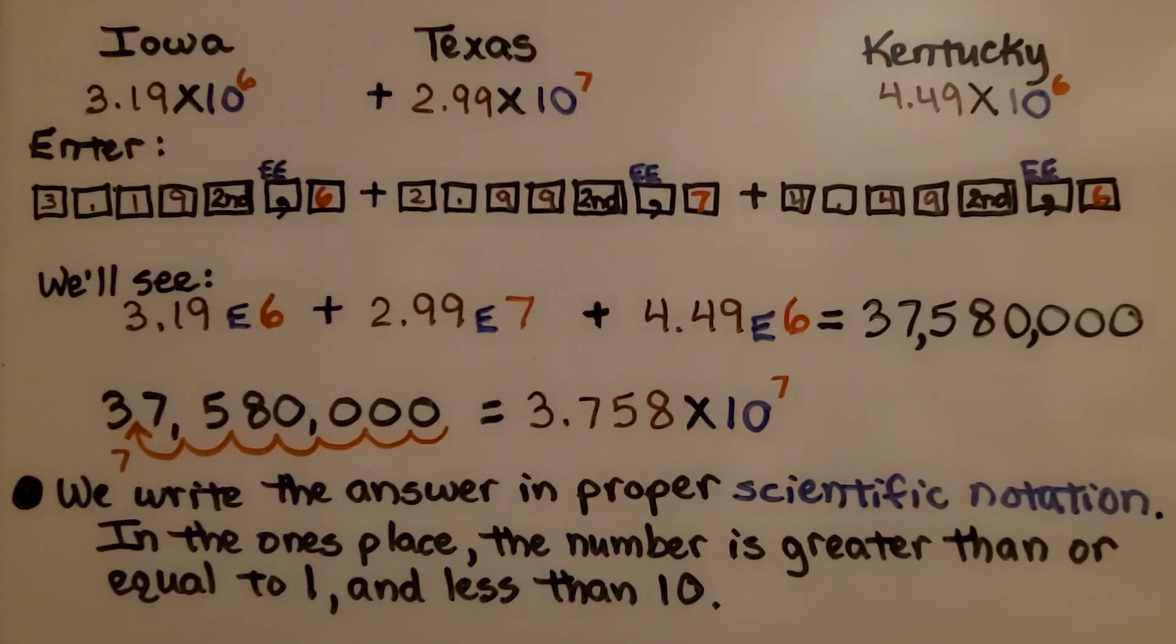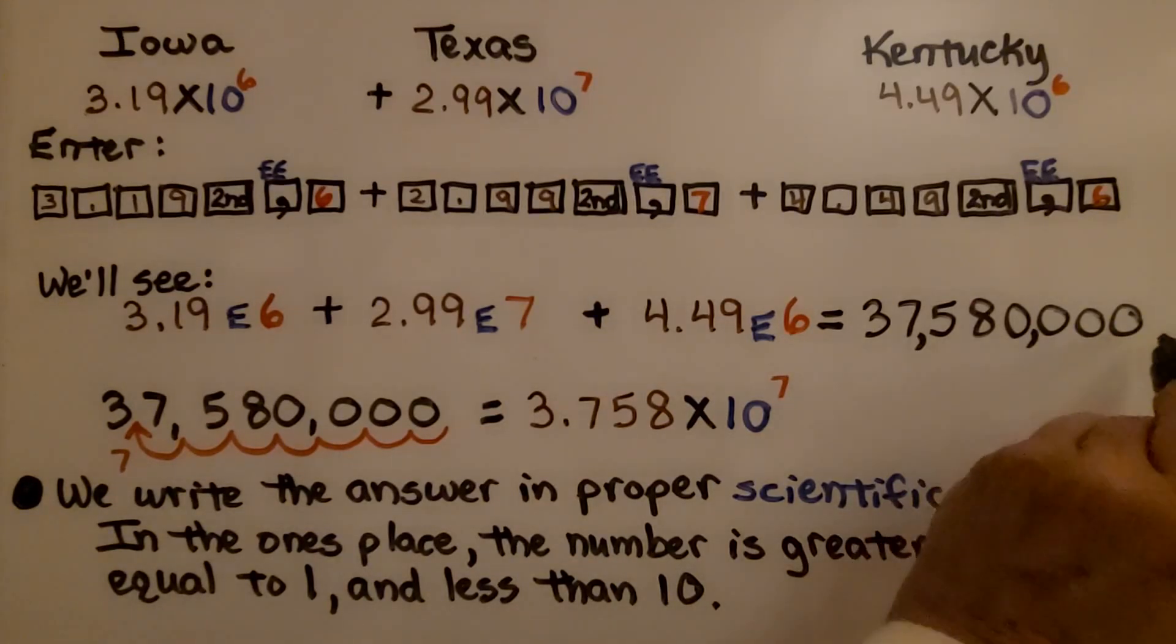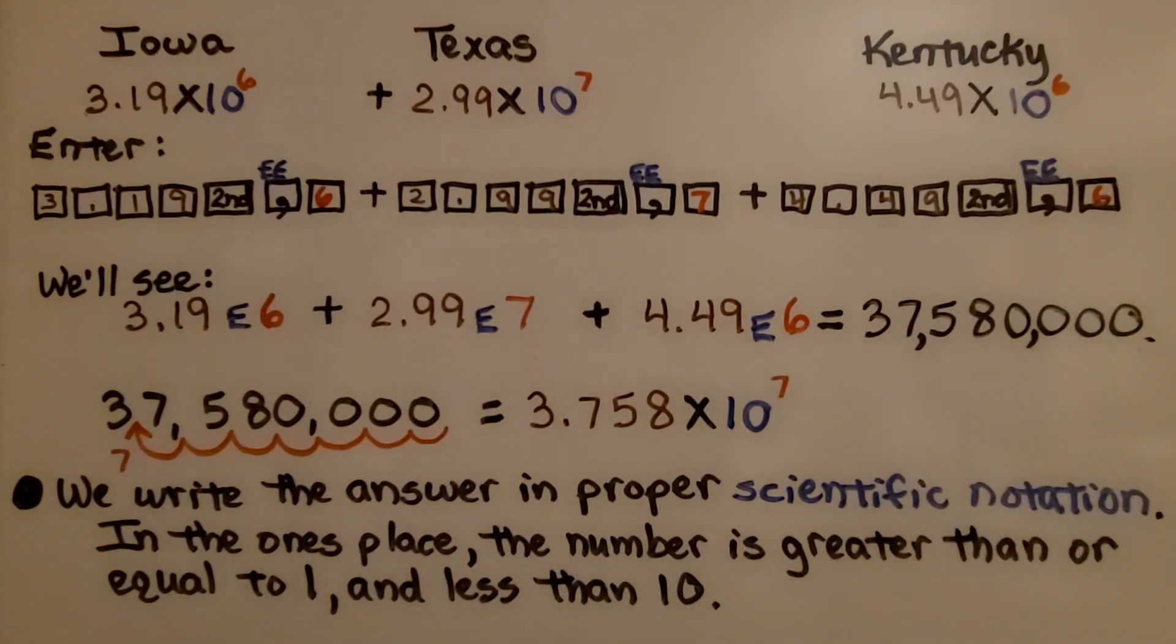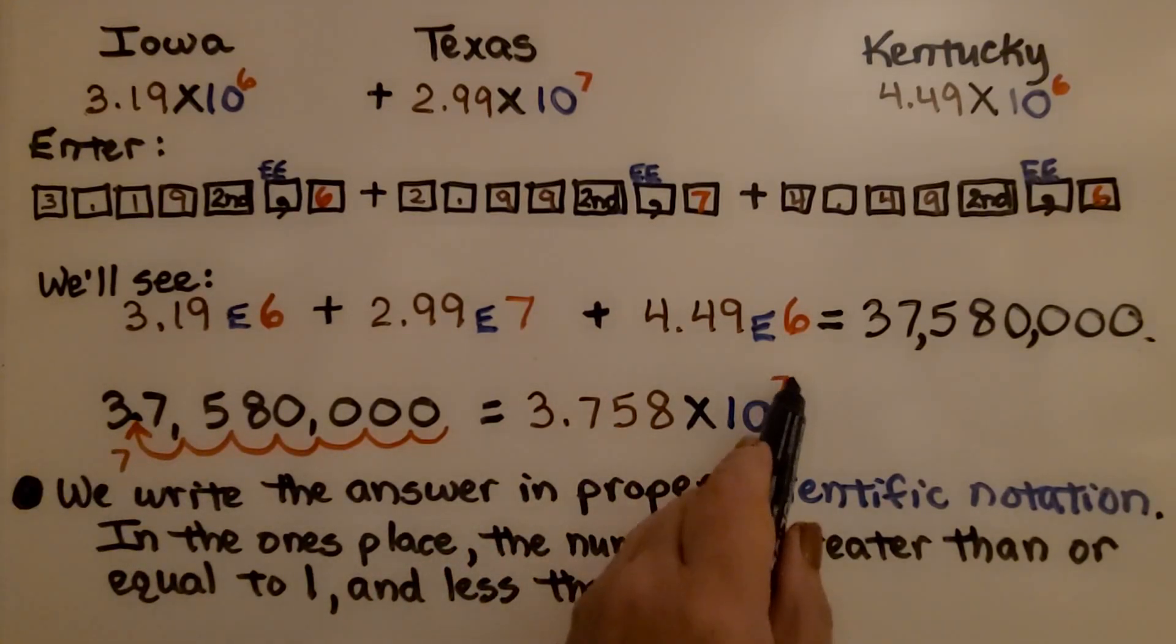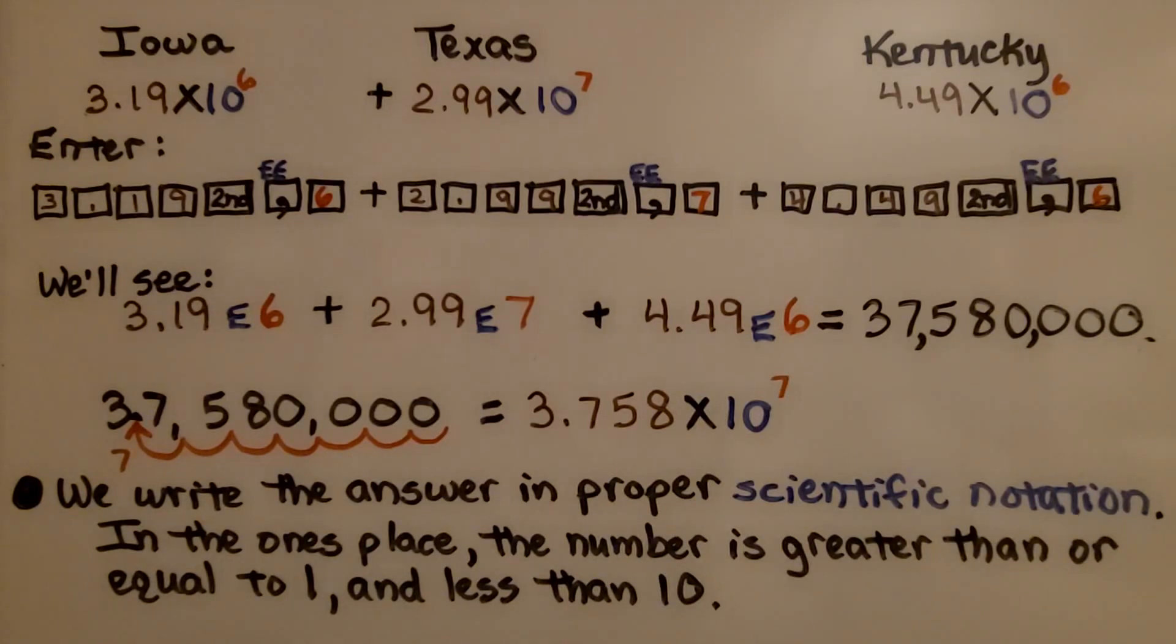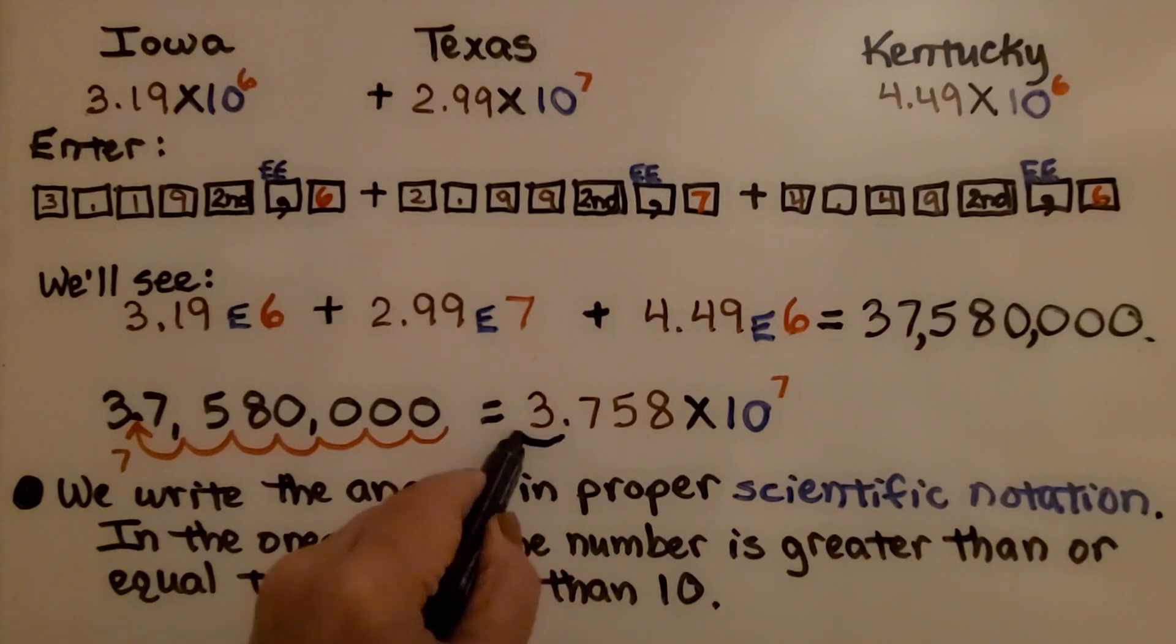Now, it told us we needed to write our answer in scientific notation. And since our decimal point for 37 million is back here, we're going to do 7 hops and put the decimal point here, so we're going to have 3.758 times 10 raised to the 7th power. We write the answer in proper scientific notation in the ones place. The number is greater than or equal to 1 and less than 10, and 3 fits that description.